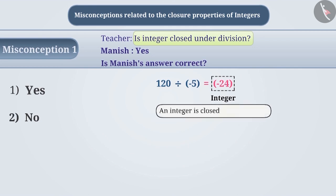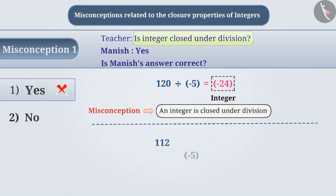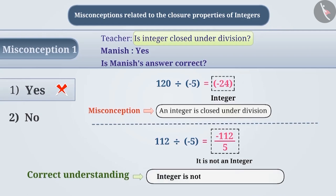it is often assumed that the integer is closed under division. The correct understanding is that the result obtained by dividing two integers is not always an integer. For example, if 112 is divided by minus 5, the result is not an integer. Therefore, the integer is not closed under division.